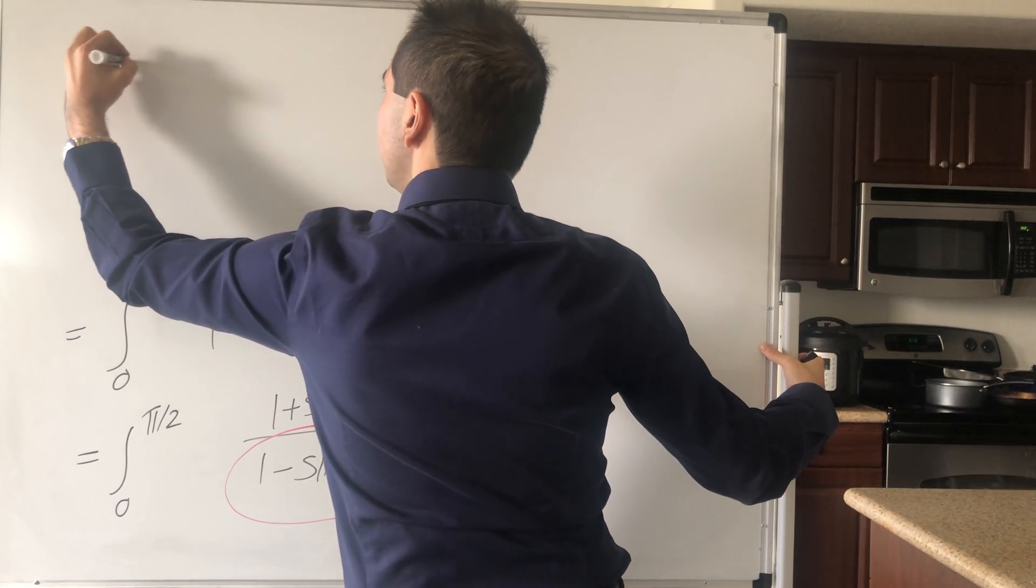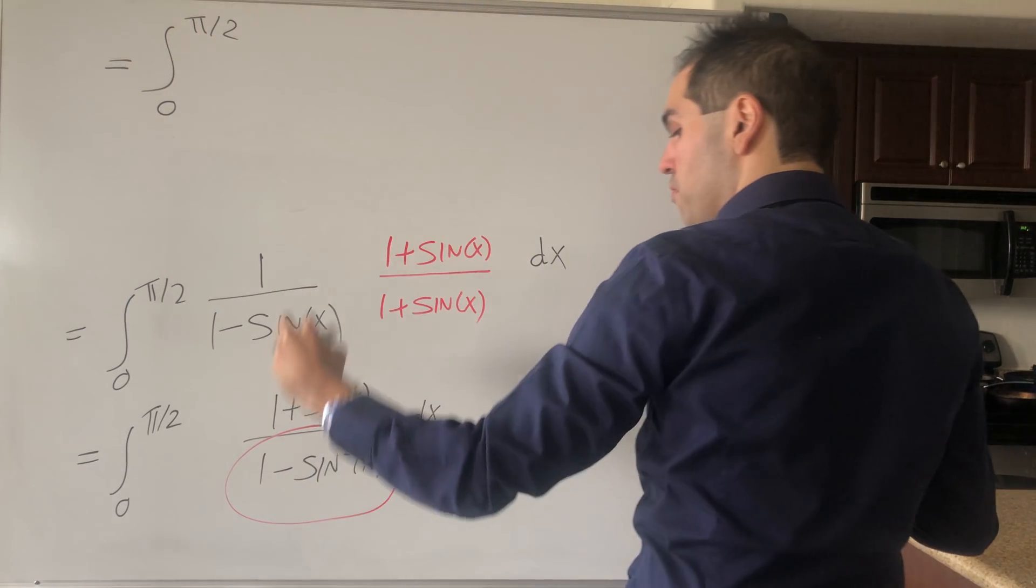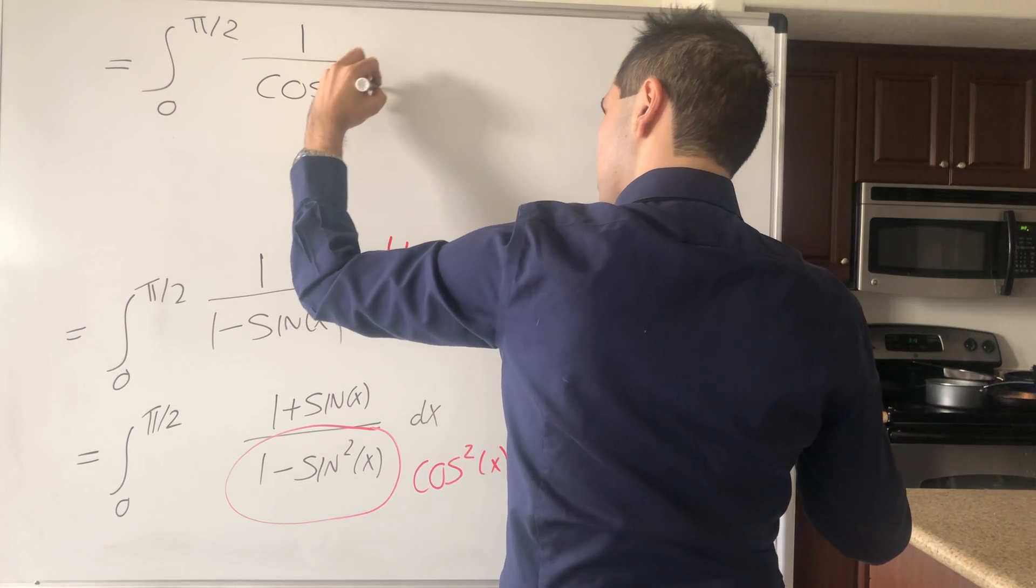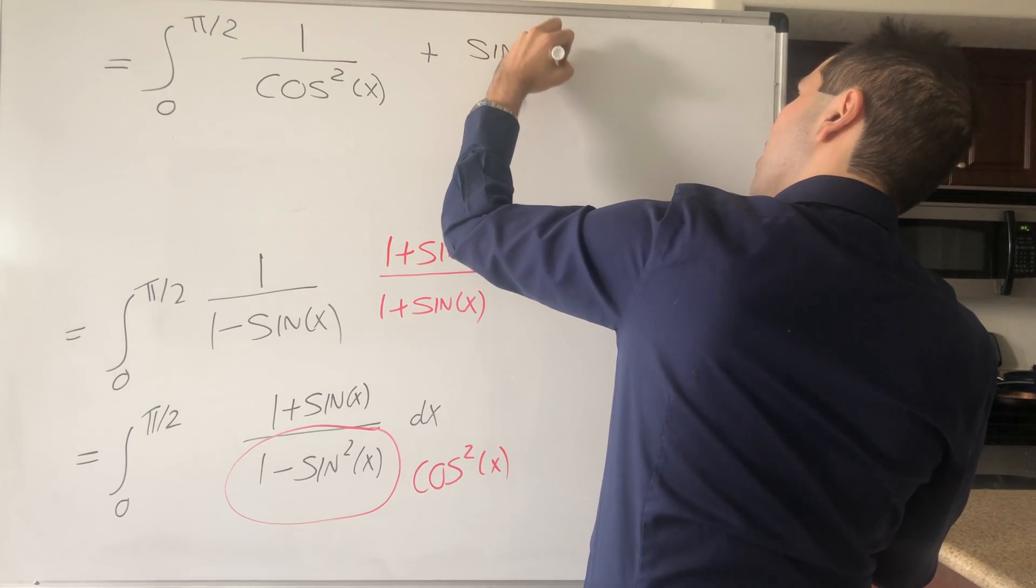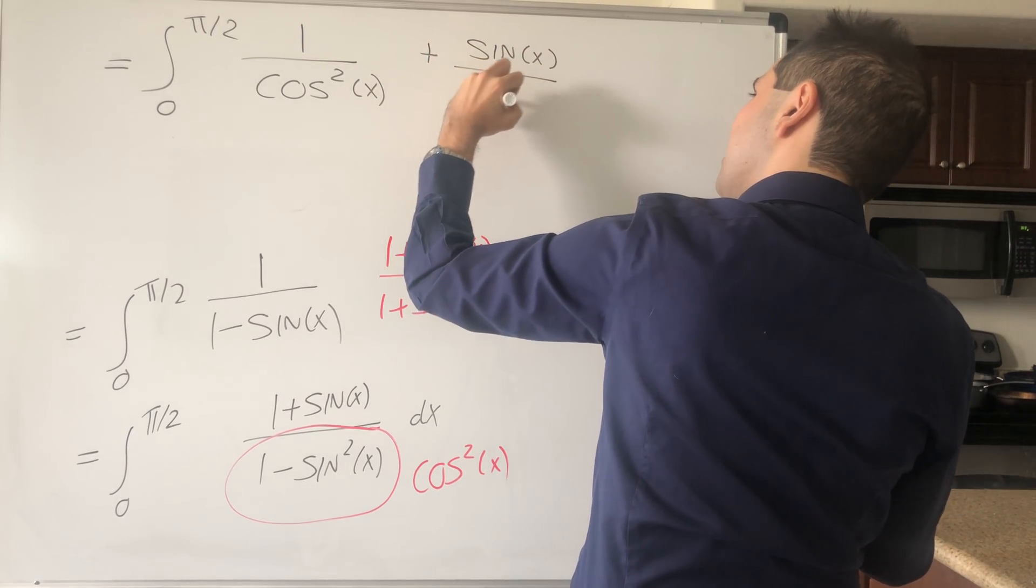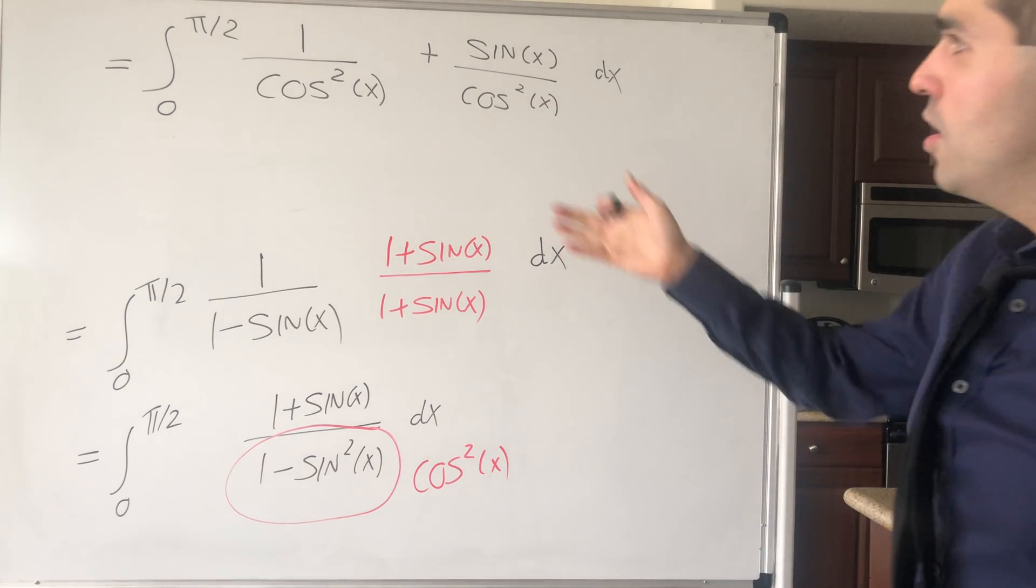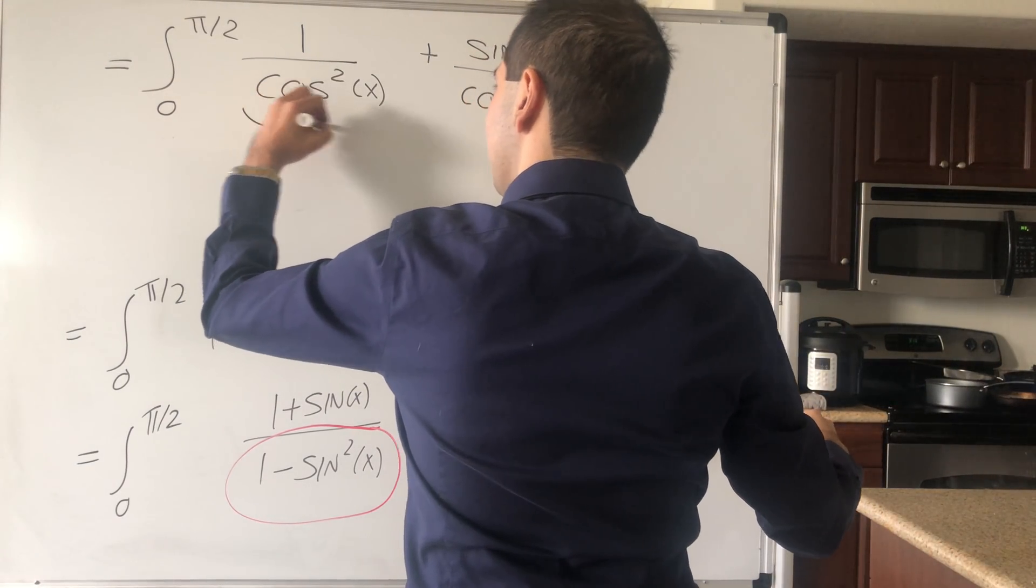This becomes the integral from 0 to π/2 of just 1/cos²(x) plus sin(x)/cos²(x) dx. But 1/cos²(x) is none other than sec²(x).